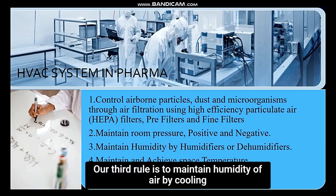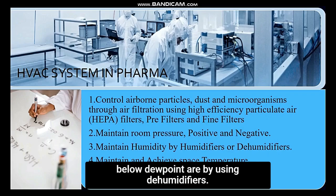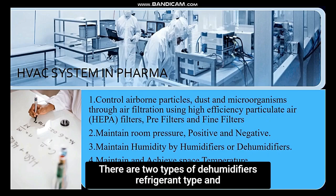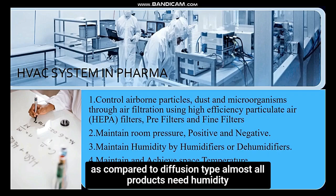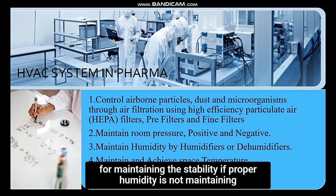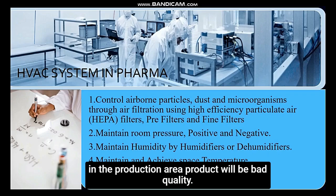The third rule is to maintain the humidity of air by cooling below the dew point or by using dehumidifiers. There are two types of dehumidifiers: refrigerant type and desiccant type. Desiccant type dehumidifiers are very economical compared to refrigerant type. Almost all products need proper humidity for maintaining stability. If proper humidity is not maintained in the production area, the product will be of bad quality.